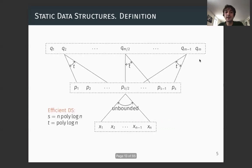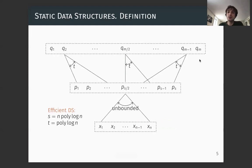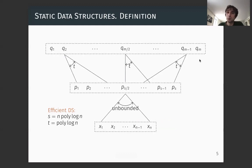We usually say a data structure is efficient if your space is close to optimal — close to linear, perhaps n times some polylog(n) — and your query time is reasonable: maybe polylog(n) or n raised to a tiny power, like n to the epsilon for a small constant epsilon.